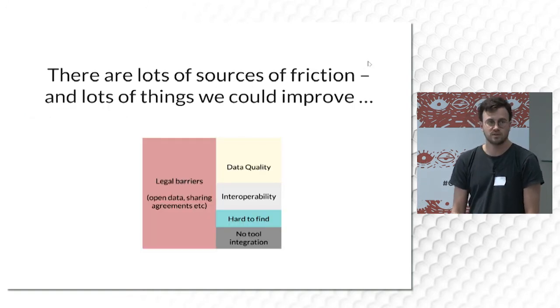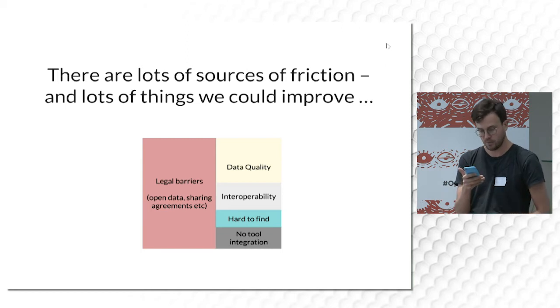Our work on CKAN over the last several years has led us to understand a lot about how people are working with data and what the barriers to opening that data and making it useful are. This has led to what we're doing now, which is building a set of lightweight specifications and tools to make it easier for people to work with data — we call this Frictionless Data.